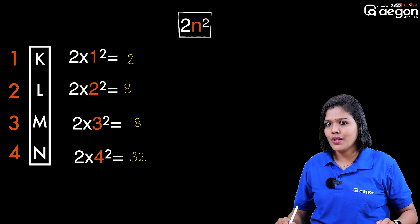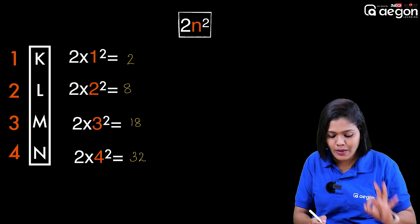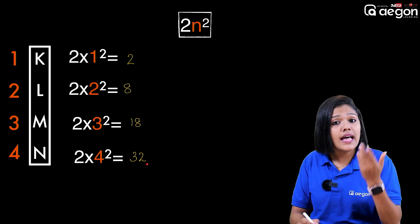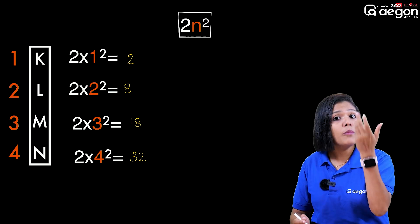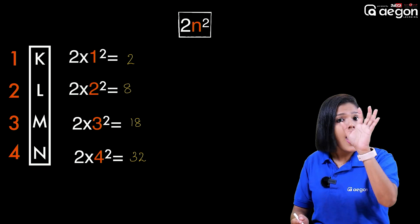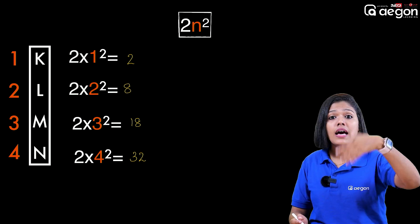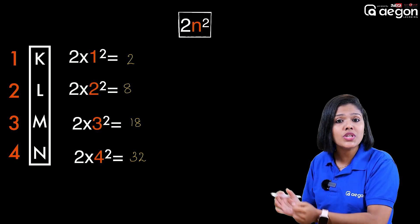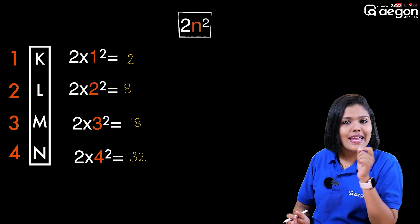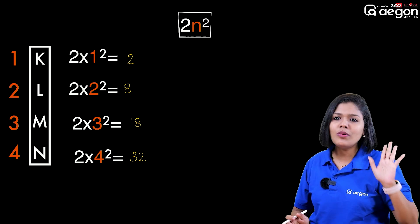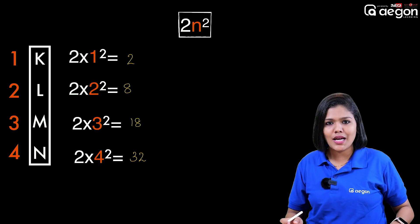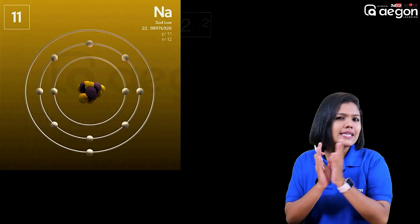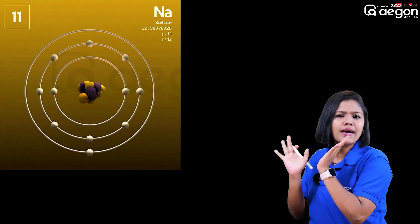The 4th shell holds 32 electrons, the 5th shell holds 50, but we don't have any electrons beyond that in practice. So we learn the basic things about this.